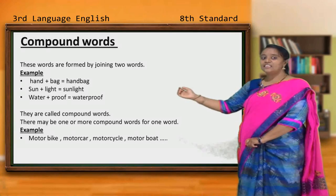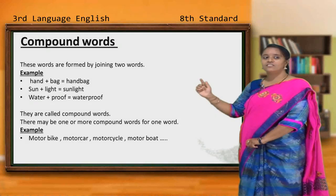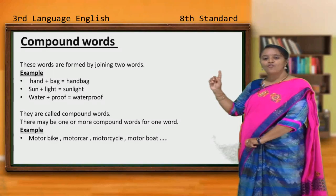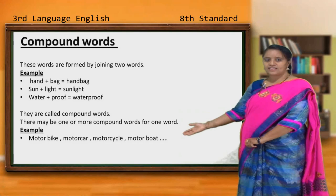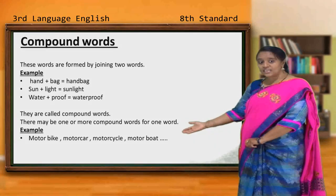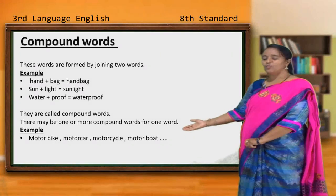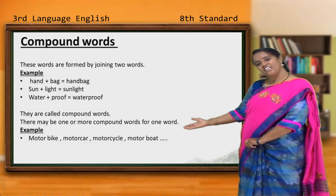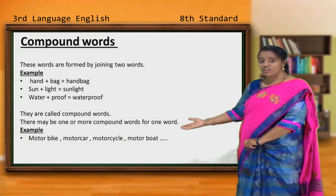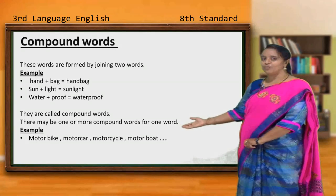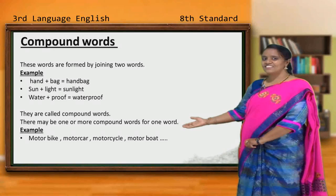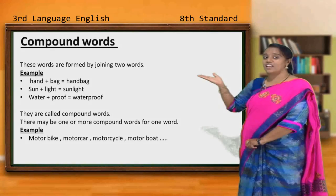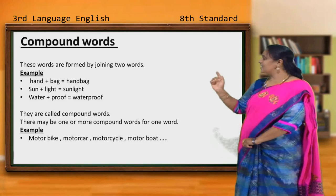You know, children, there may be one or more compound words for one word. For example, motorbike, motor car, motorcycle, motor boat. Using the word 'motor', we can make many compound words. Compound words are formed by joining two words. Do, doosre alphaz onko mila ke, jo naya alphaz vanta hai, usse hem kya kehte hai? Compound words. I think you got the idea.